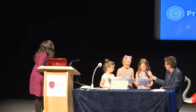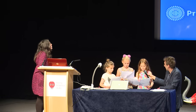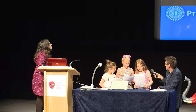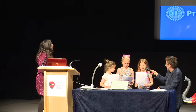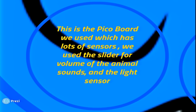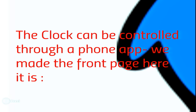It could be a Raspberry Pi which you can control through a phone or computer. This is the Pico board we used, which has lots of sensors. We used the light sensor and the slider for volume of the animal sounds. The clock can be controlled through a phone app — we made the front page.